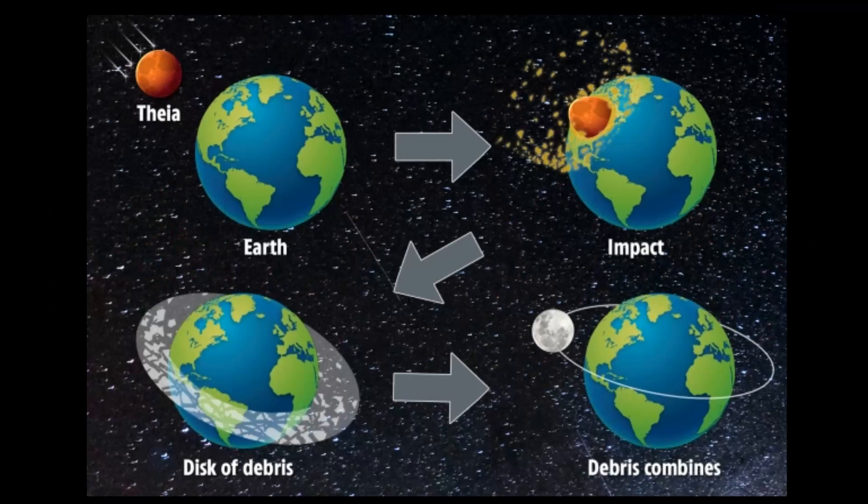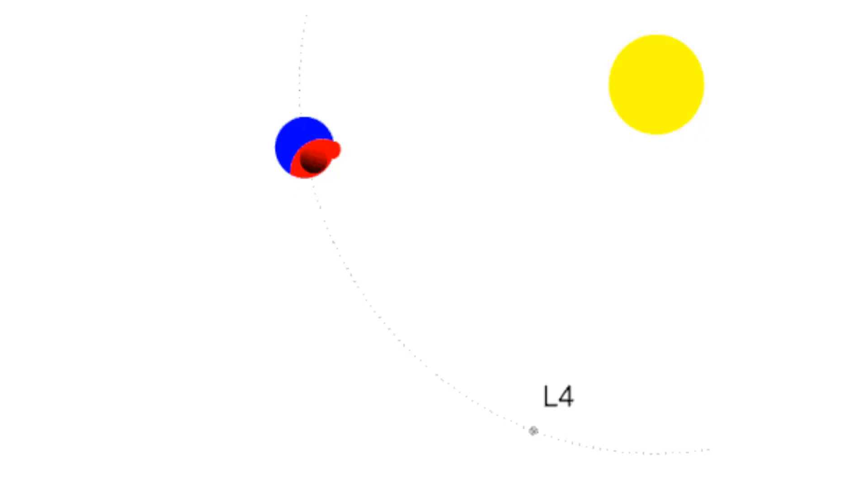Over time, this debris circled around the earth, and as time went on, the debris combined to form our moon. This theory also explains why the earth and moon have similar mineral compositions. Here is an animation showing how Theia collided with the earth.